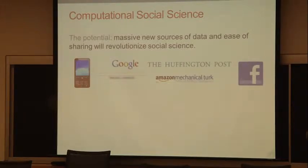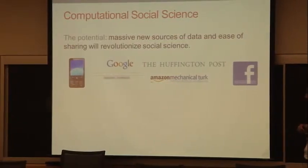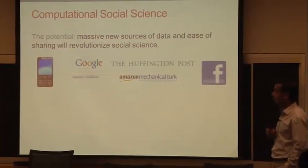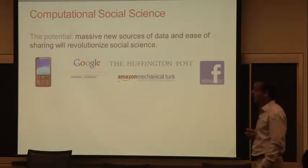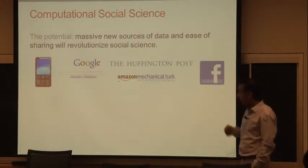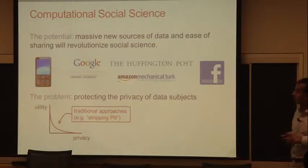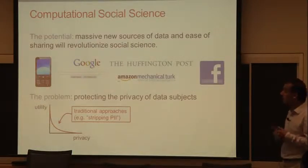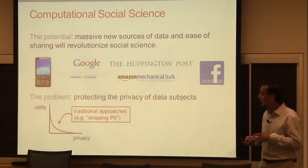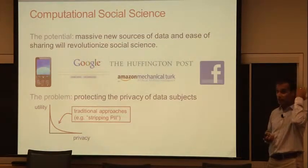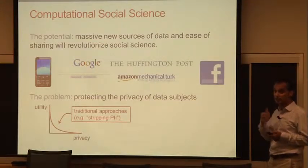In addition, the internet and data repositories like those supported by Dataverse make it much easier for researchers to share the data obtained from such sources with other researchers to enable replication, reproducibility, and entirely new analyses of the data that's been collected. However, a major problem for realizing the full potential of this vision of computational data-driven social science is that many of these sources of data contain sensitive information about individuals. Currently, social science researchers aren't equipped with tools to adequately protect the privacy of the data subjects while analyzing and sharing the data.